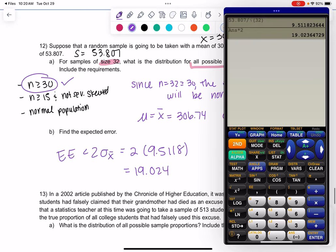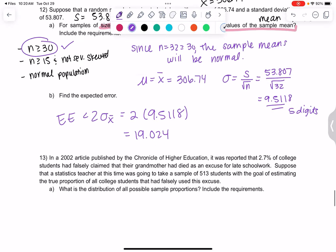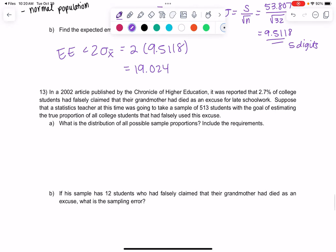That's sample means. Let's do one more. We're looking at higher education. Chronicle of Higher Education reported 2.7% of college students. I'm already feeling this is probably proportion land because of the percent, but let's keep going. We're going to take a random sample of 513 students and estimate the true proportion. So we are in proportion land.